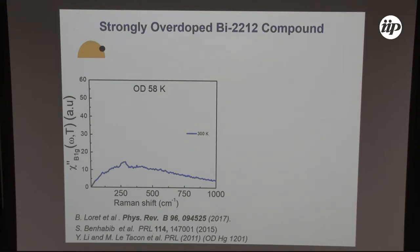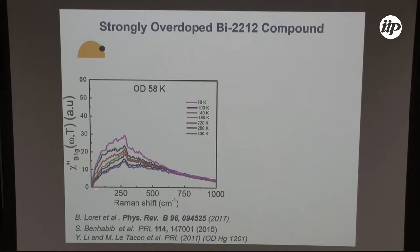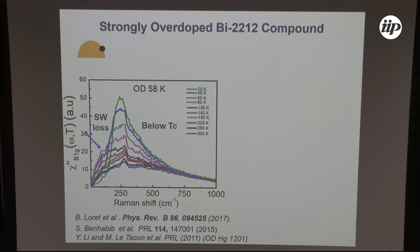For an overdoped sample with a critical temperature of 58 Kelvin, we see a broad electronic background — a typical response for strongly correlated systems at 300 K. As we decrease temperature, the broad electronic background increases and the slope at low energy increases, which is typical metallic behavior because the slope at low energy of the Raman response function is proportional to the quasiparticle lifetime. As we enter the superconducting state, we see a loss of spectral weight at low energy.